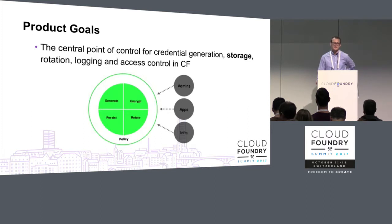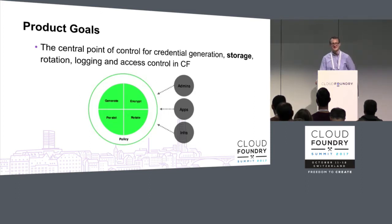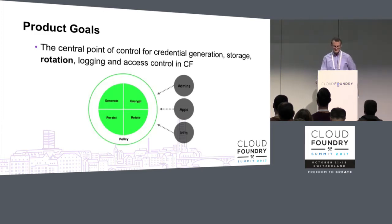Storage alludes to the fact that we need to encrypt any data that's sensitive before we store it. Cryptography is a hard problem — we have a staff cryptographer who, if at any point we think cryptography is easy, we go talk to him and he sets us straight. Rotation is a really core component of managing credentials securely. Rotating all the credentials in Cloud Foundry is a huge pain. Our goal — and we're not there yet — is to make this so that we can do this transparently and automatically.